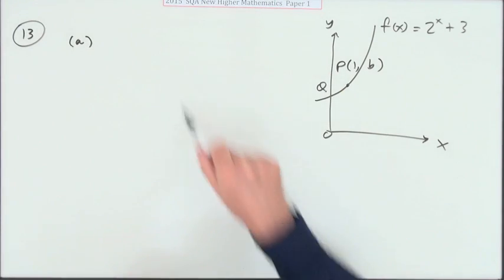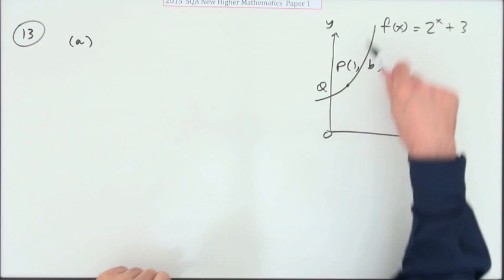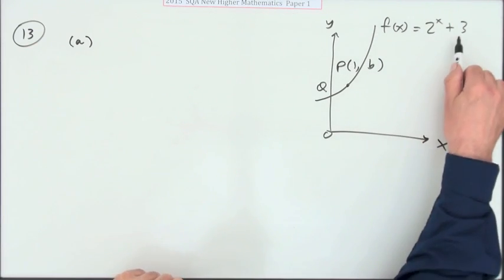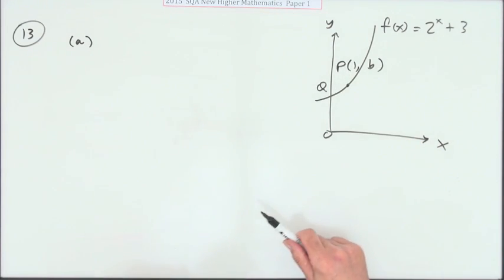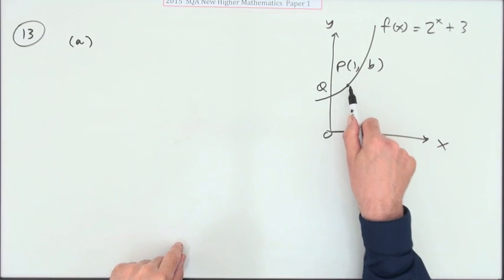So number 13 from paper 1 of the 2015 new higher. We've got this little graph here, it's an exponential, it's a shifted exponential, so it's going up 3 from where it should be. And the first thing is, here's a point on it.